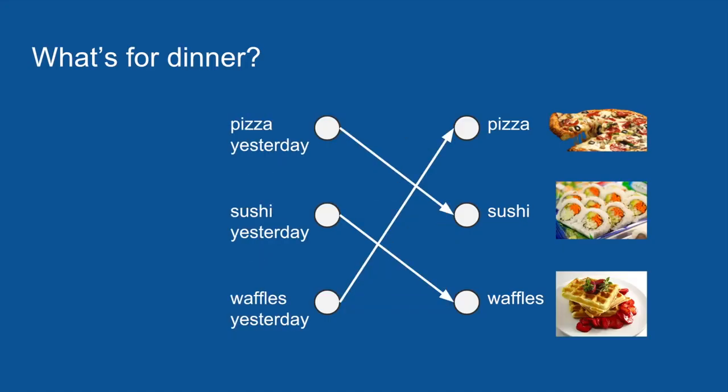So knowing this, we can make a new neural network. In our new one, the only inputs that matter are what we had for dinner yesterday. So if we know if we had pizza for dinner yesterday, it'll be sushi tonight, sushi yesterday, waffles tonight, waffles yesterday, pizza tonight. It becomes a very simple voting process and it's right all the time because your flatmate is incredibly consistent.